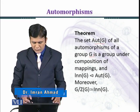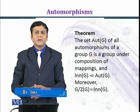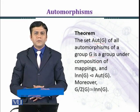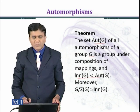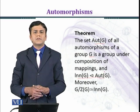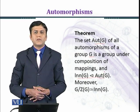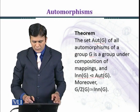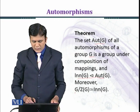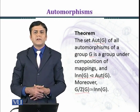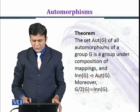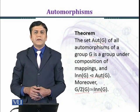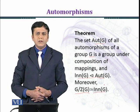In this module, we will prove the remaining part: that the inner automorphism group Inn(G) is a normal subgroup of Aut(G). Moreover, G over the center of G is isomorphic to Inn(G).